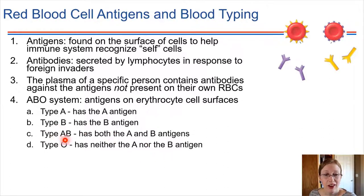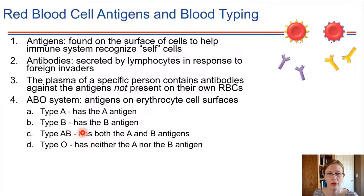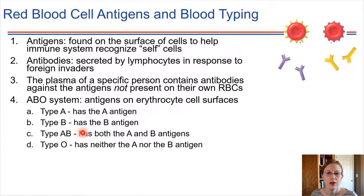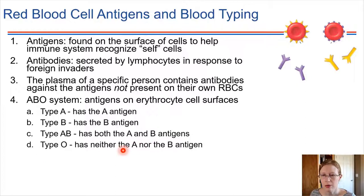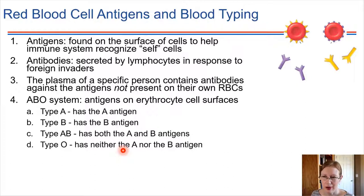Some people actually have both, and this is because humans are diploid — we get one gene from our mom and one from our dad. It could be that you get an A from mom and a B from dad, so your blood cells might have both antigens present. Finally, type O — people with type O blood don't have either A or B, so their red blood cells are particularly smooth on the surface; they don't have those carbohydrates present.